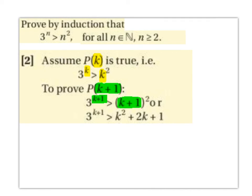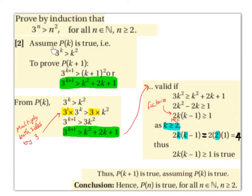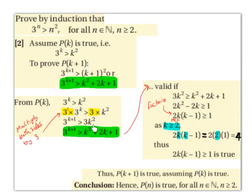We use our assumption to do that. From P(k), 3^k > k². We multiply both sides by 3: 3^1 × 3^k > 3k². The left-hand side becomes 3^(k+1). So 3^(k+1) > 3k². We also had that 3^(k+1) > k²+2k+1. Since these share the same left-hand side, we can equate: 3k² ≥ k²+2k+1.